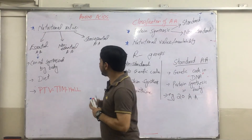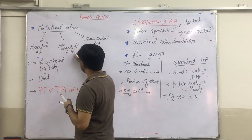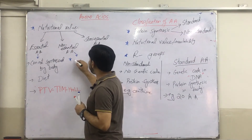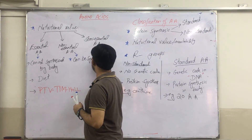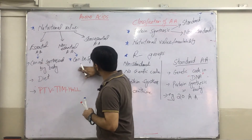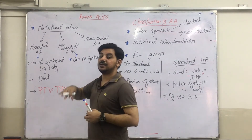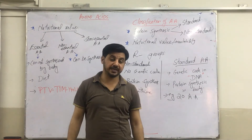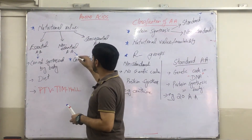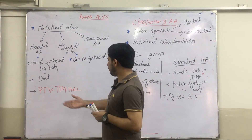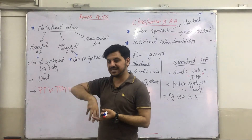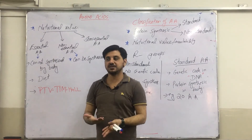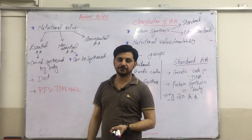The second class is non-essential amino acids. Non-essential amino acids are such type of amino acids which can be synthesized by the body, and we do not need to take them through our diet. After selecting the essential amino acids from the 20 amino acids, what we are left with are the non-essential amino acids.